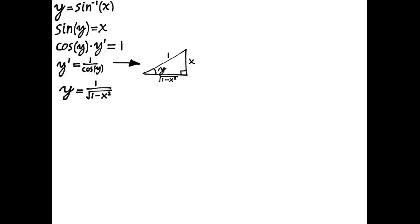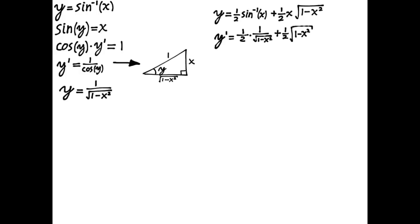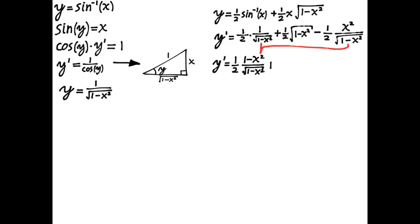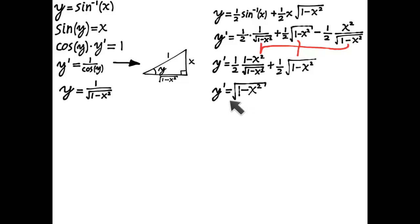This has some interesting implications. For example, suppose I take the function y equals one-half inverse sine of x plus one-half x times the square root of 1 minus x squared, and then I differentiate and simplify the result. The answer turns out to be a very simple algebraic expression. So the consequence is I can take all sorts of algebraic expressions and integrate them, and the integral will involve trigonometric functions.